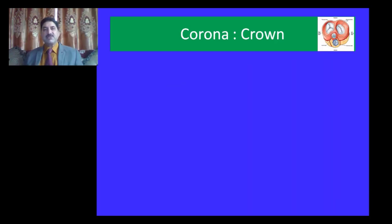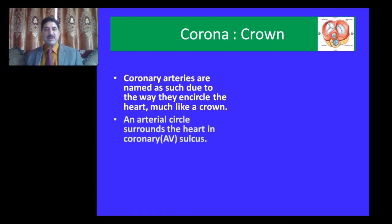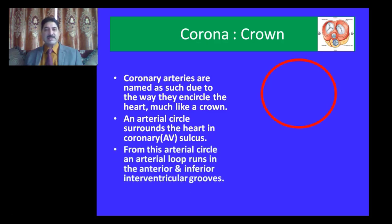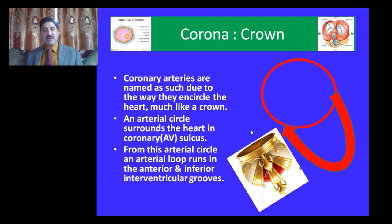Why are the arteries of the heart named coronary arteries? Coronary arteries are named as such due to the way they encircle the heart, much like a crown. They form an arterial circle which surrounds the heart in the coronary sulcus or atrioventricular sulcus. The main tracts of right and left coronary arteries occupy this sulcus. From this arterial circle, an arterial loop runs in the anterior and inferior interventricular grooves — the anterior one is the left anterior descending coronary artery and the posterior one is the posterior interventricular artery, also called the posterior descending coronary artery. Thus the coronary artery surrounds the heart like a crown surrounds the head.